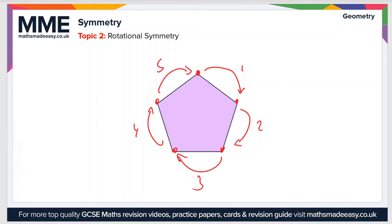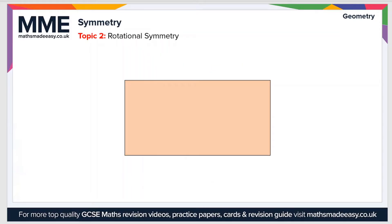For a regular polygon, the order of rotational symmetry will be equal to the number of sides. Let's have a look now at an irregular polygon where the sides are not all the same length. Here we have a rectangle. We want to know what the order of rotational symmetry is.